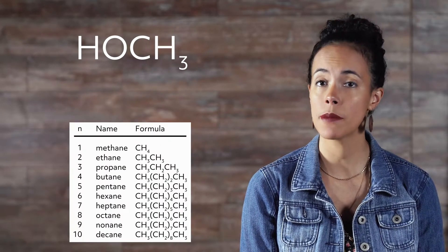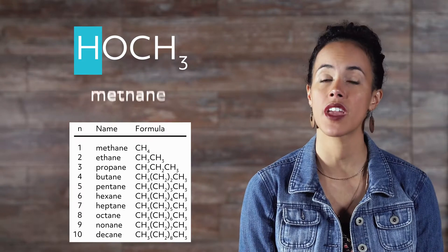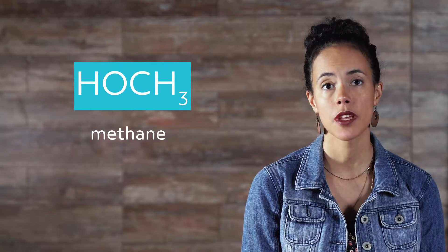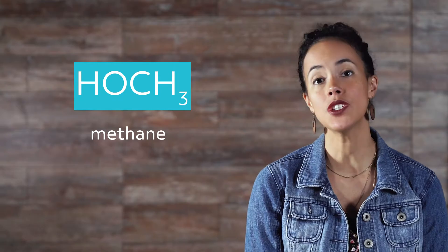Let's begin with the simplest alcohol, which has the formula HOCH3. Since the longest carbon chain is 1, we use methane as our root word. Notice that instead of having a fourth hydrogen attached to the carbon, there is a hydroxyl group, so the name must change to reflect that. We do this by replacing the terminal E in methane with -ol, giving us methanol.